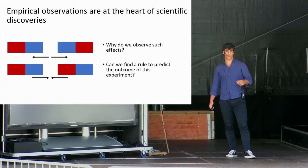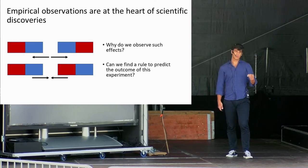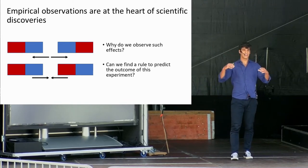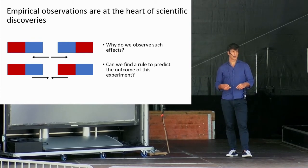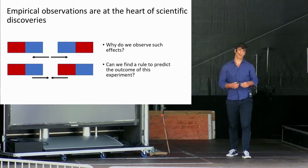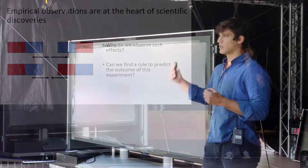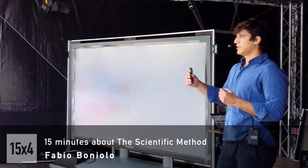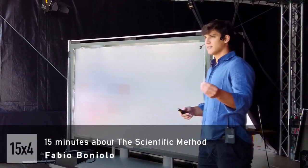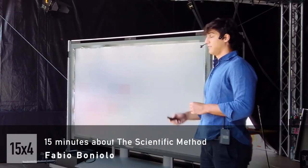We might wonder, why do we observe such effect? Is it possible to extract a general rule that allows us to predict the outcome of such experiment? What we just did was to start from a real empirical world observation and try to extract a general rule. This approach has been used in science and in scientific discoveries for ages and is known under the name of scientific method.